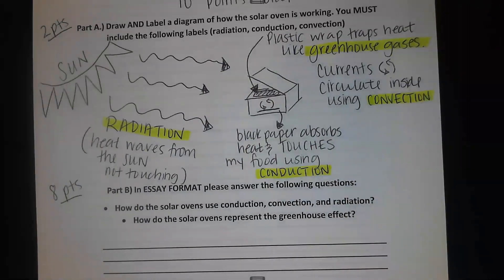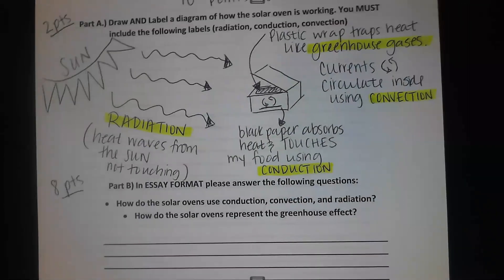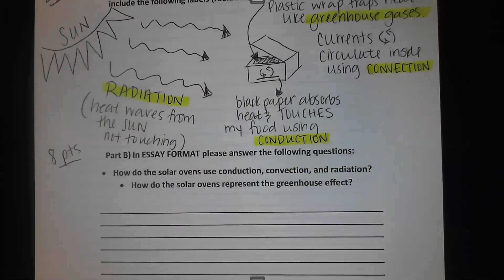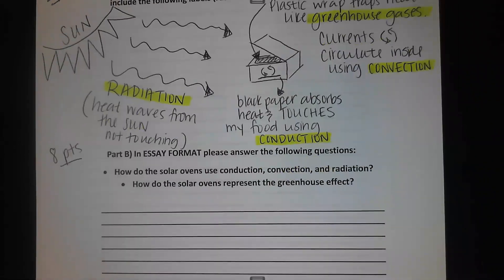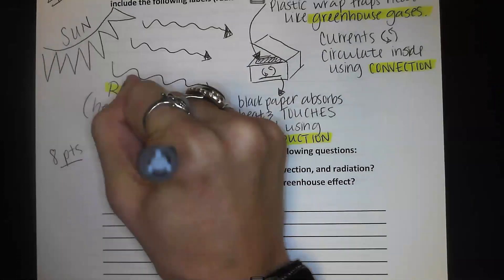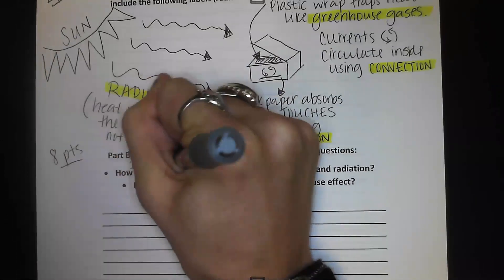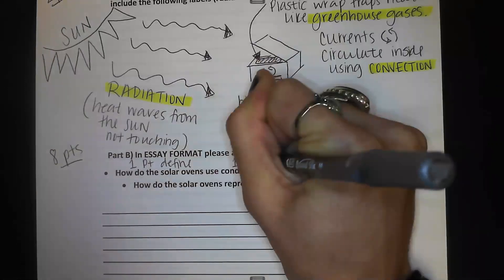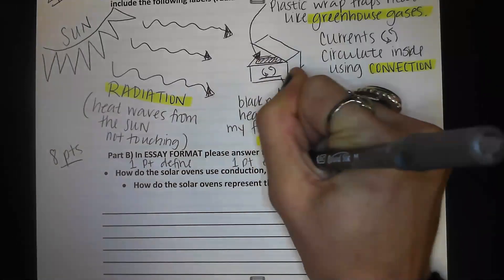Your diagram explains how each type of heat transfer is used in the box, but you need to elaborate further because it's your project and you need to know how it works. Part B is worth eight points. You get one point for defining and one point for explaining each topic — and there are four topics.